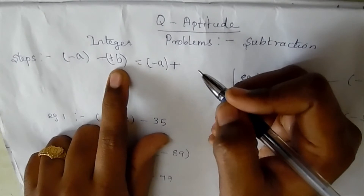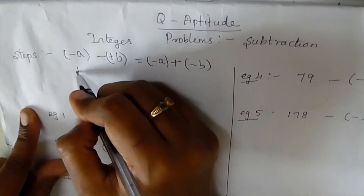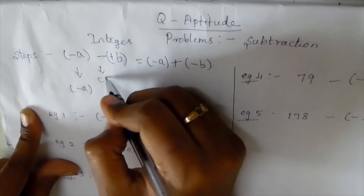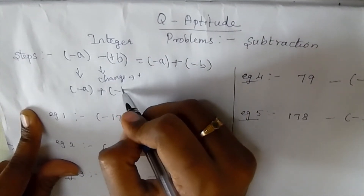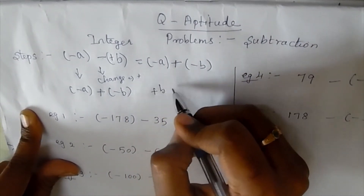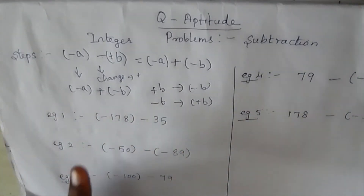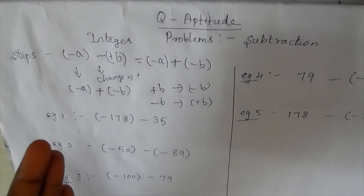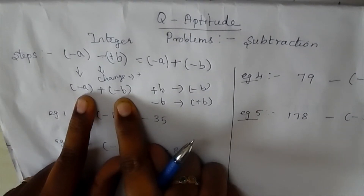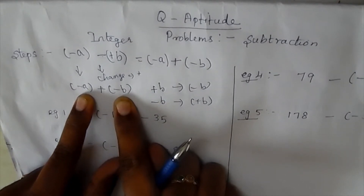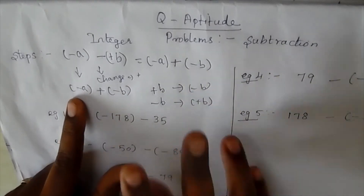How to do this step? We need to change the sign. If you want to change, change to plus. For addition: if both signs are the same, you add and keep the same sign. For subtraction: if the signs are different, you subtract and put the sign of the greater number.